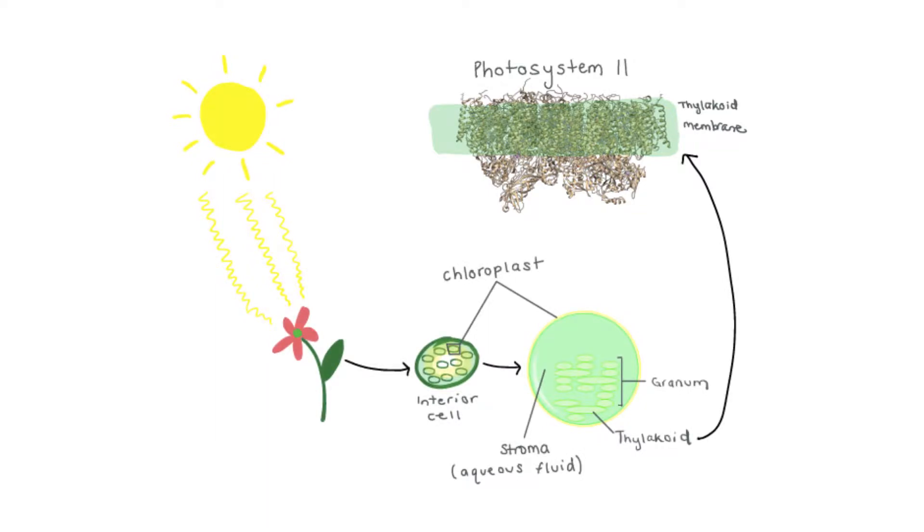Photosystem 2 is the main focus here. It is embedded in the membrane of the thylakoid. The top part of photosystem 2 is exposed to the stroma and the bottom part is in the lumen. The lumen represents the area inside the thylakoid membrane.